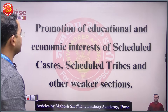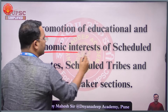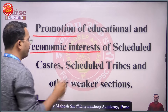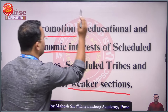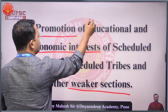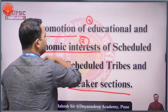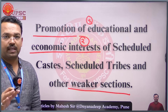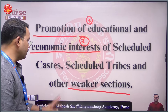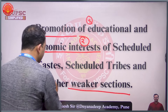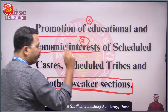Article 46 says: promotion of educational and economic interest of scheduled caste, scheduled tribe and other weaker sections. So first important is educational interest, second is economic interest, and for whom? For these three sections: scheduled caste, scheduled tribe and the third one is other weaker section.